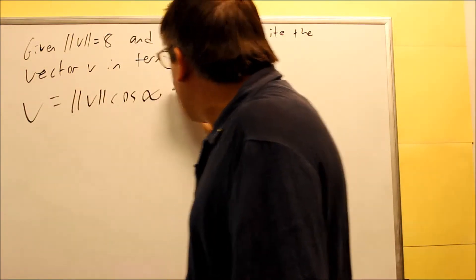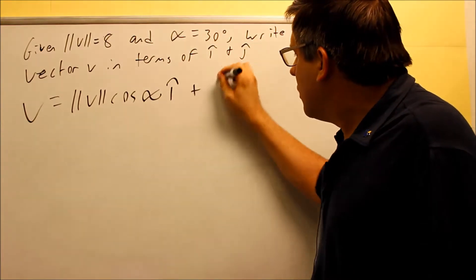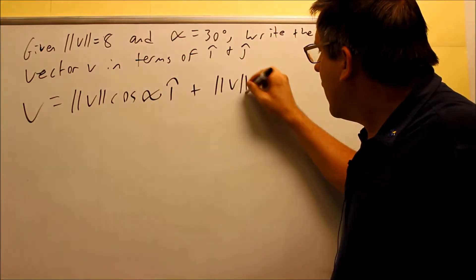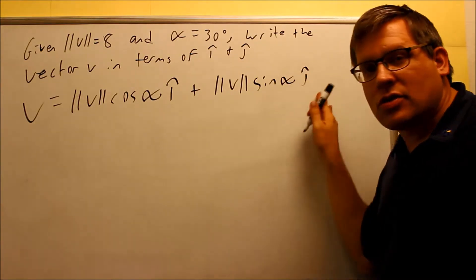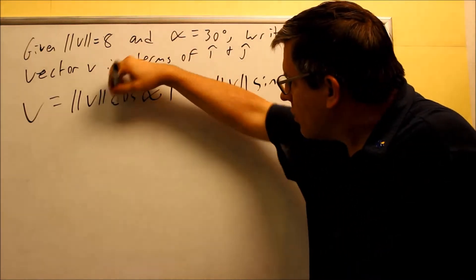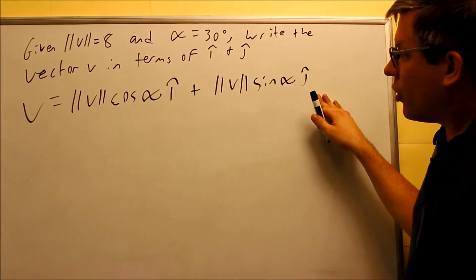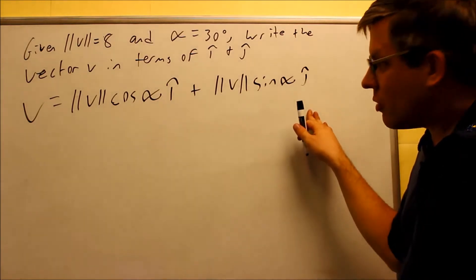So the formula we just talked about was this one. This is a way that you can take the given information and turn that information into a vector in this format. So that's the formula we just derived. And so now we're going to put in the information and we can write this in terms of I and J.